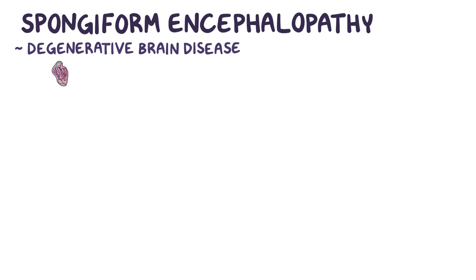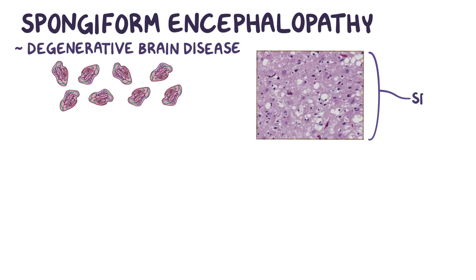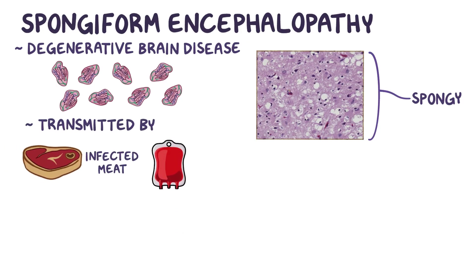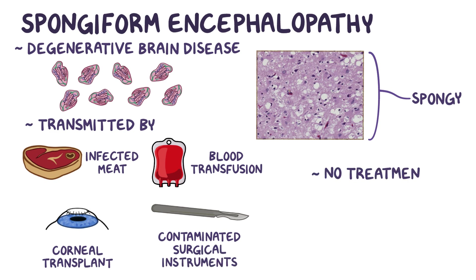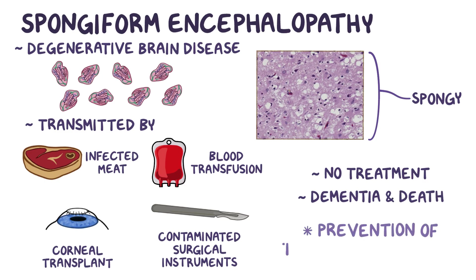As a quick recap: spongiform encephalopathy is a degenerative brain disease caused by the accumulation of misfolded prion proteins. This degeneration gives the brain a spongy appearance and is seen in diseases like Creutzfeldt-Jakob disease and kuru. Prions can be transmitted by eating infected meat, blood transfusion, corneal transplants, and contaminated surgical instruments. There is no treatment for these diseases and they always result in dementia and eventually death, so prevention of transmission is the key management strategy.